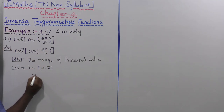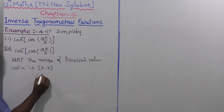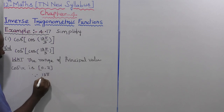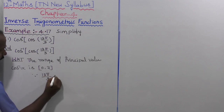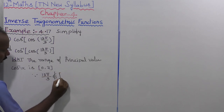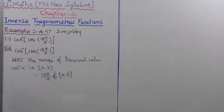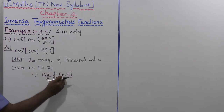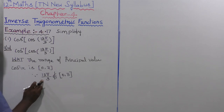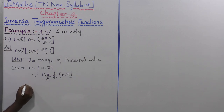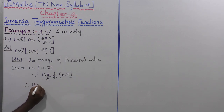Since 13π/3 does not belong to the given interval [0, π], we need to simplify it to bring it within the interval.